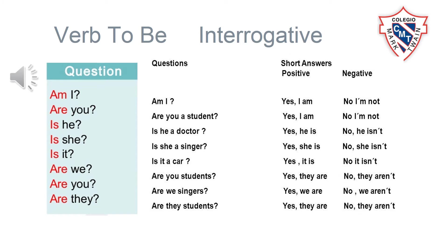Now we are going to learn the interrogative form. When you make a question using the verb to be, you are going to say first the verb to be and then the pronoun. You have some examples here with the question and the answer — the short answer in affirmative and the short answer in negative.